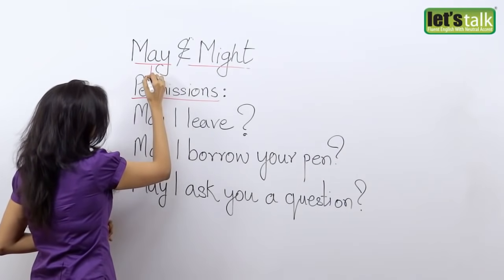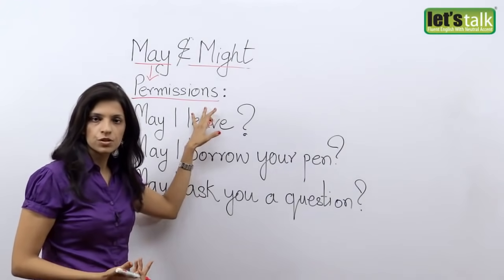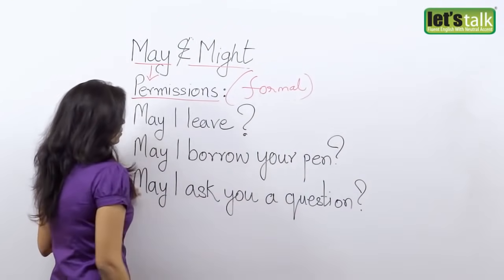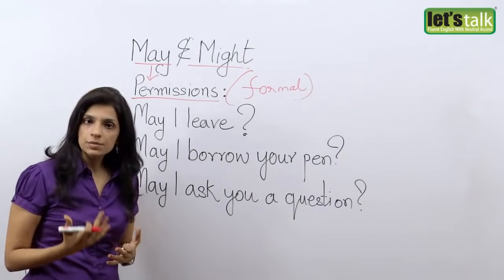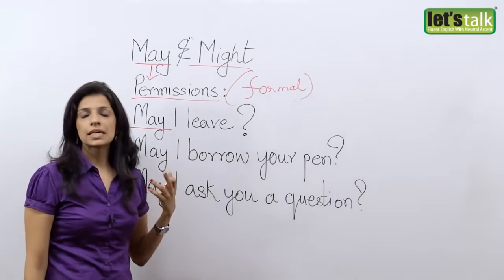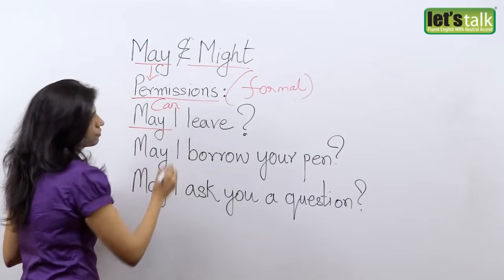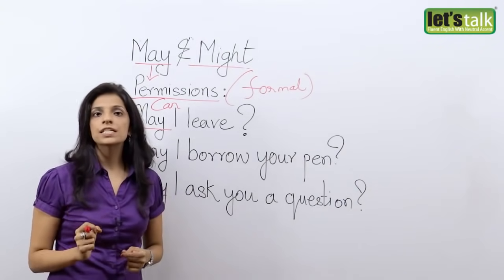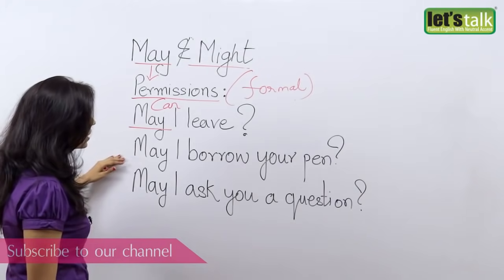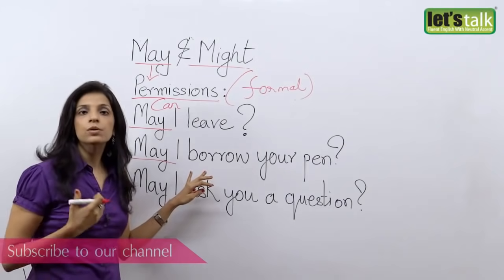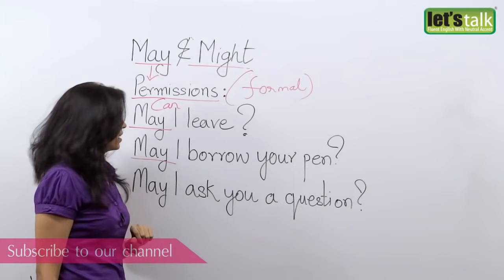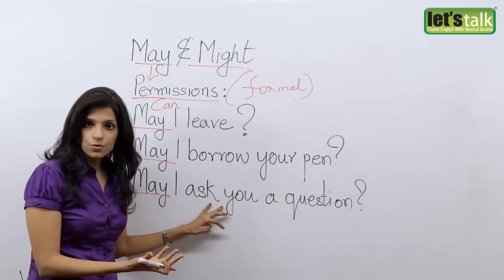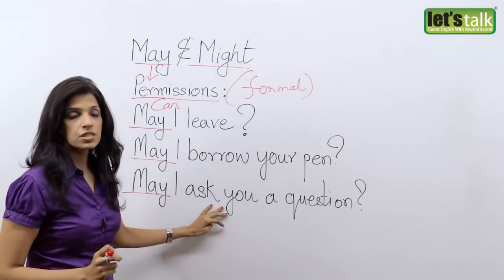We use may when you want to ask permission or seek permission — this is for formal permissions. So when you tell your boss, 'May I leave now?' — when you ask or take permission, you say may. A lot of people get confused and feel we can also say 'can.' 'Can I leave?' Well, can is a capability, it is not permission. So when you want to take a formal permission, please use may. For example, 'May I borrow your pen?' — something formal where you want to be polite. 'May I ask you a question?' — you are taking permission to ask a question. Please remember: for formal permissions, we use may and not can.